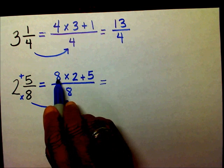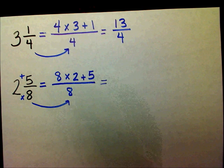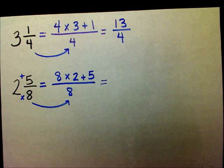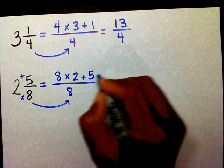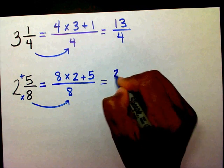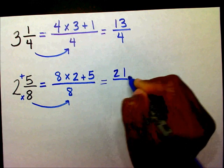So sixteen, eight times two is sixteen. Sixteen plus five is twenty-one over eight.